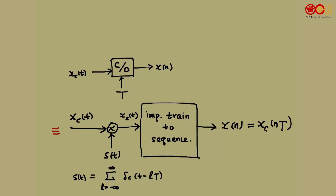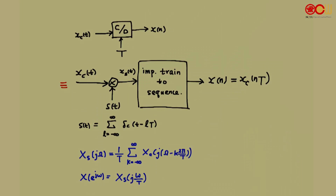That's the discrete time sequence after sampling. In the frequency domain, if we look at XS — XS is a continuous time signal — its Fourier transform XS(jω) consists of shifts of XC. The shifts are 2π/T apart, and there's a scalar 1/T. XC(jω) is related to XS through a frequency scaling.